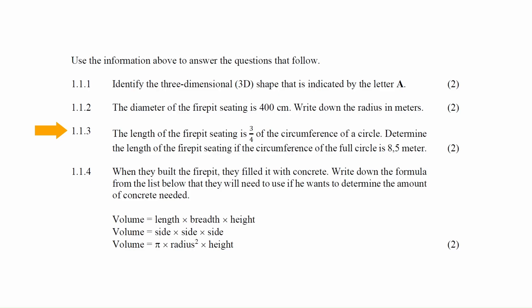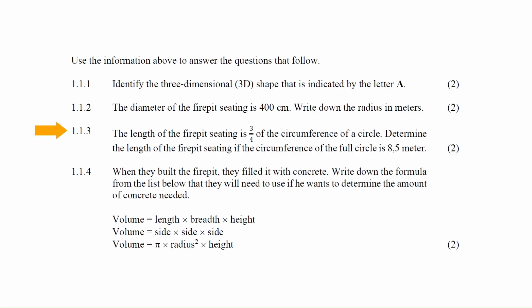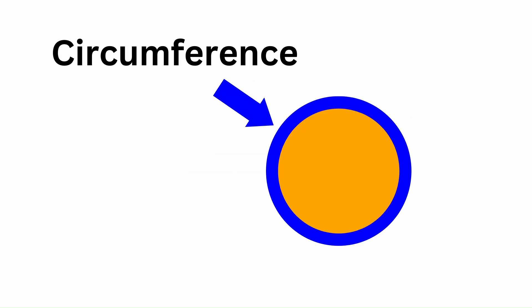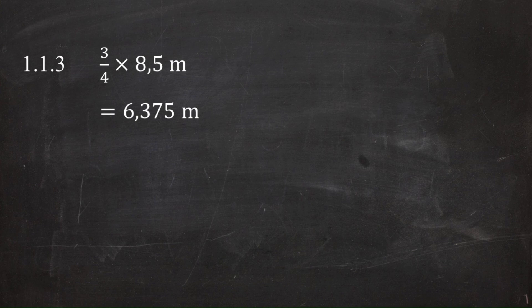In question 1.1.3 it is stated that the length of the fire pit seating is three-quarters of the circumference of a circle. You are instructed to determine the length of the fire pit seating if the circumference of a full circle is eight comma five meters. The circumference of a circle is the length of the boundary around the circle. Since the seating is three-quarters of the circumference, the length will be three over four multiplied by eight comma five meters, which equals six comma three seven five meters.